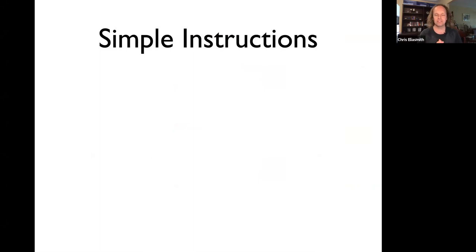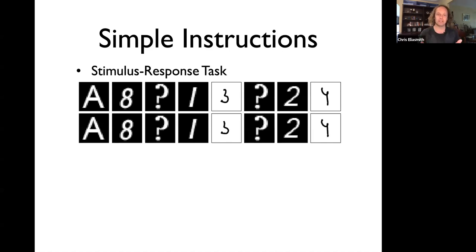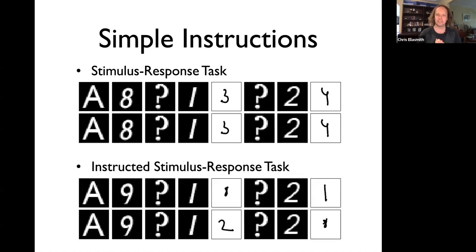One of the big changes to SPAWN is instruction following. We can distinguish two kinds: simple instructions — basically instructions the agent has been trained on over and over again, like every time you see a one, write a three — and what we call the instructed stimulus response task, where on trial one the model is told if you see a one, write an eight, and on the second trial it's told if you see a one, write a two.